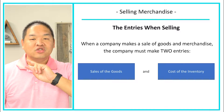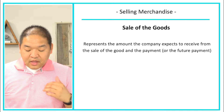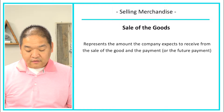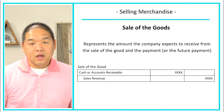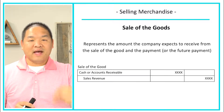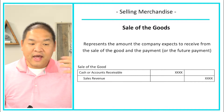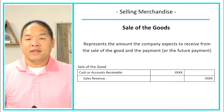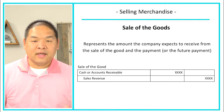Every sales transaction has two transactions that need to be done. When we sell the goods, we represent the amount the company expects to receive from the sale and the payment or future payment. We put what we expect to receive — not necessarily the full sale price. For example, even though we sold it to them for $1,000, we know they're only going to pay us $600, so we report it at $600, not $1,000.